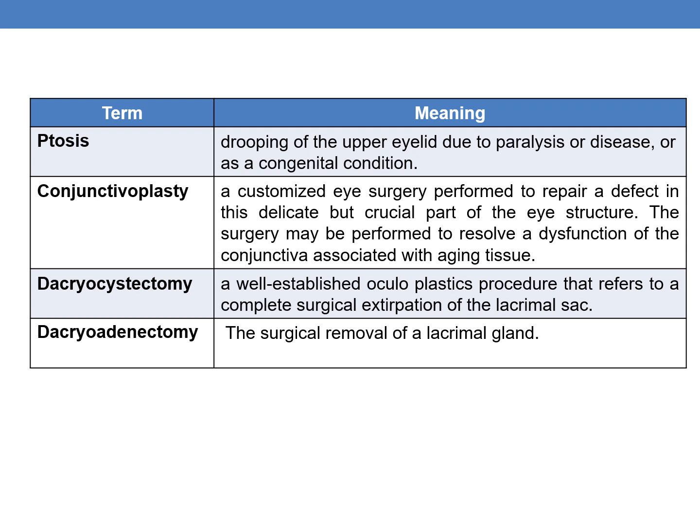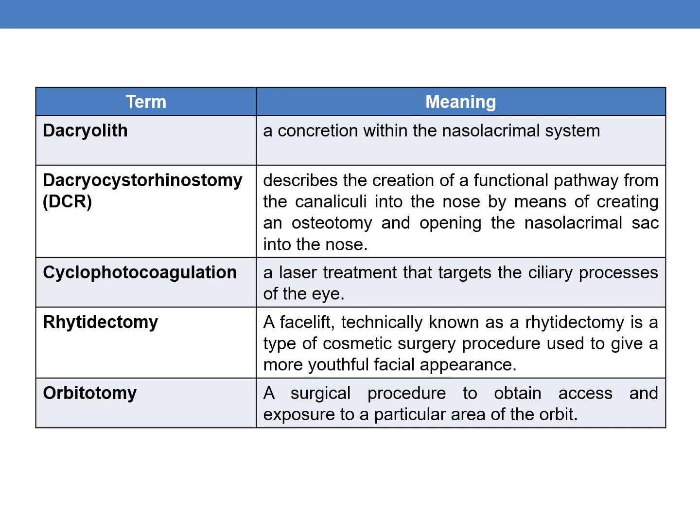The next term is dacrocystectomy. Dacro is related to tears, the lacrimal sac or duct. Dacrocystectomy is a well-established oculoplastic procedure that refers to the complete surgical extirpation of the lacrimal sac. The next term is dacroadenectomy. It is a surgical removal of the lacrimal gland. The next term is dacrolith. It is a concretion within the nasolacrimal system.